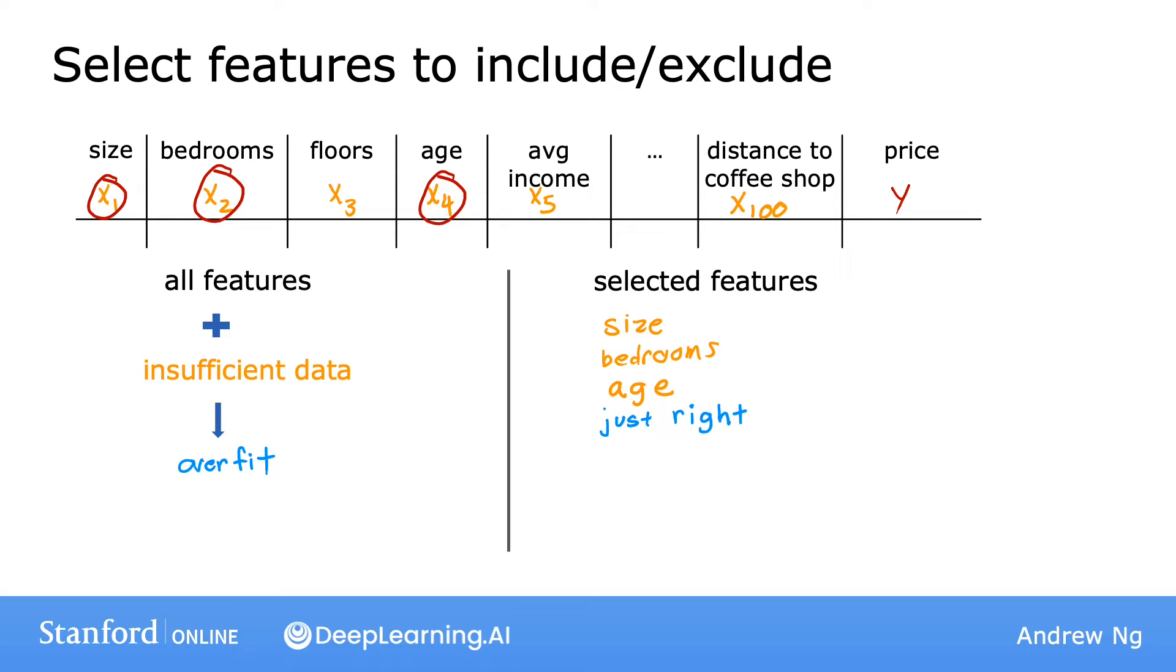Choosing the most appropriate set of features to use is sometimes also called feature selection. One way you could do so is to use your intuition to choose what you think is the best set of features, what's most relevant for predicting the price. Now, one disadvantage of feature selection is that by using only a subset of the features, the algorithm is throwing away some of the information that you have about the houses. For example, maybe all of these features, all 100 of them, are actually useful for predicting the price of a house. So maybe you don't want to throw away some of the information by throwing away some of the features.